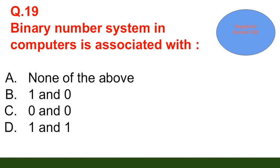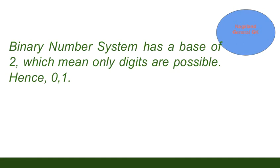Question number 19: Binary number system in computers is associated with — option A: none of the above; option B: one and zero; option C: zero and zero; option D: one and one. The correct answer is option B — one and zero. The binary number system has a base of two, meaning only two digits are possible: zero and one.